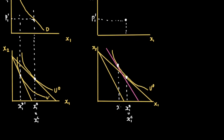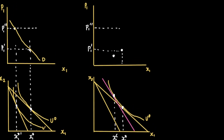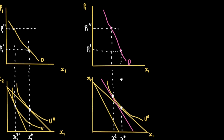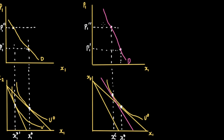X1C prime is the new Hicksian demand — the optimal quantity the consumer would consume at the new prices, given that he can stay on the same utility level. When we plot that point in the price-quantity map and connect the dots, we get the Hicksian demand curve, shown here in pink. We can see that the Hicksian demand curve is actually steeper than the Marshallian demand curve, labeled D sub C.